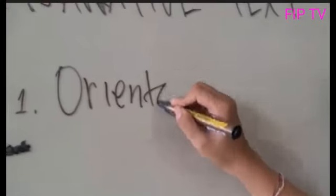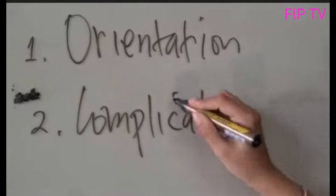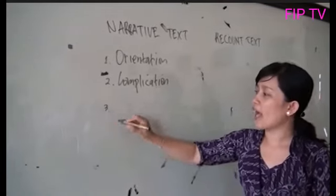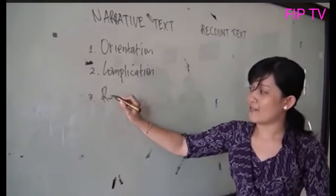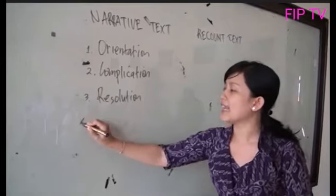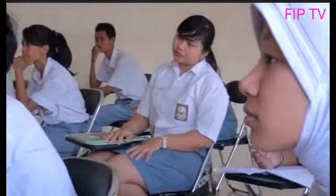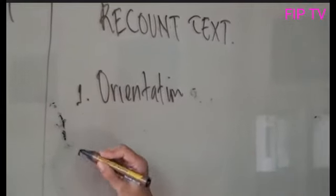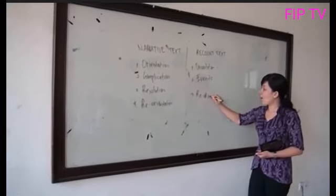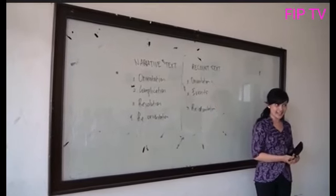For narrative text, the general structure consists of four parts: orientation, complication (the problems of the story), resolution (how to solve the problem), and reorientation. For recount text, the structure consists of: orientation, events, and reorientation — with no problem present. Do you understand? Yes!